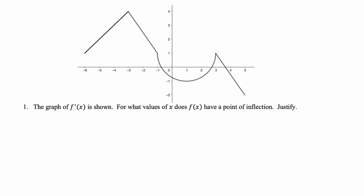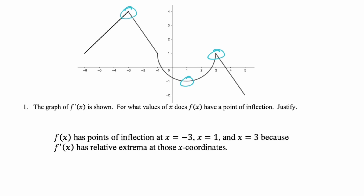First up, given a graph of the first derivative, some people are still struggling to identify points of inflection. I've circled the points on the graph where points of inflection occur for f(x). The justification: f(x) has points of inflection at x = -3, 1, and 3, because f' has relative extrema at those x-coordinates. You don't have to think about it any more than that.